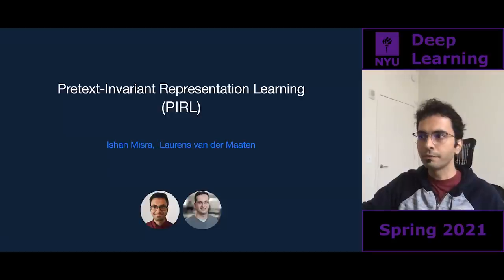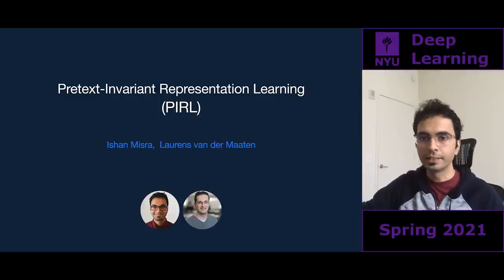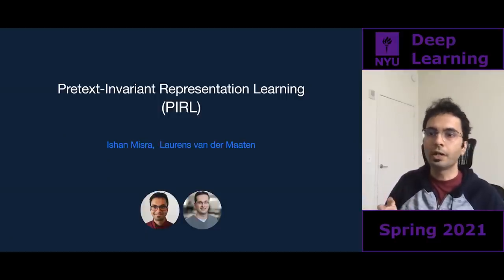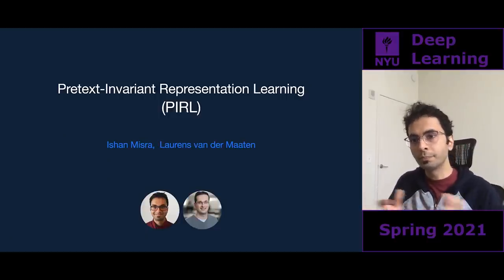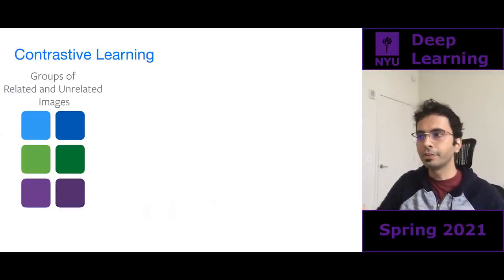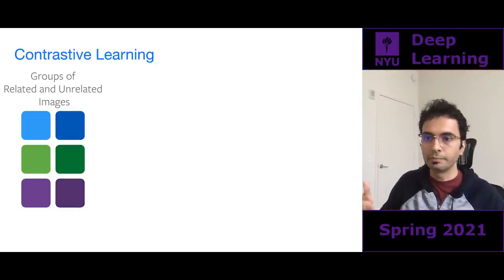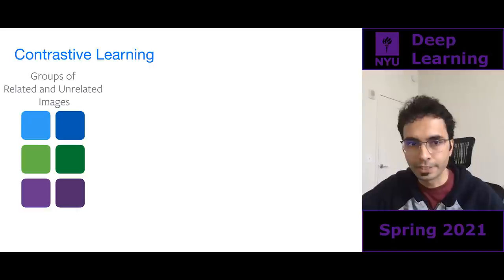One of the first works we did with contrastive learning was PIRL — Pretext Invariant Representation Learning — which shows how contrastive learning relates to pretext tasks. You've already seen contrastive learning in detail, so I'll be fairly quick, but please stop me with any questions.